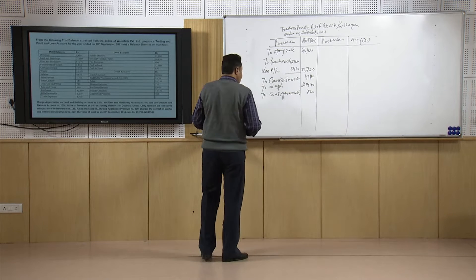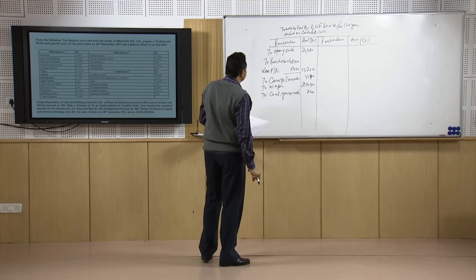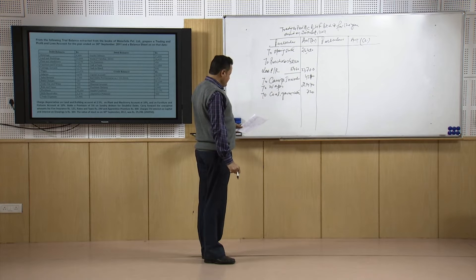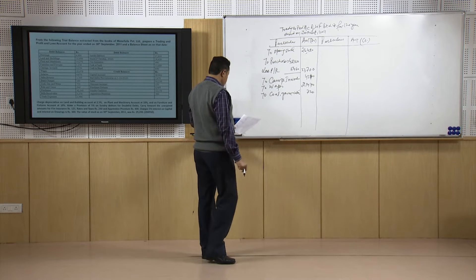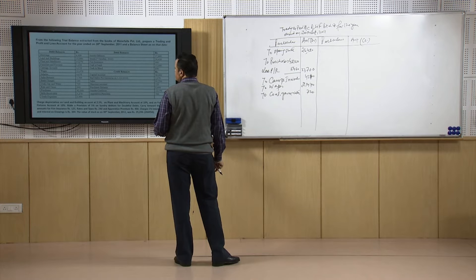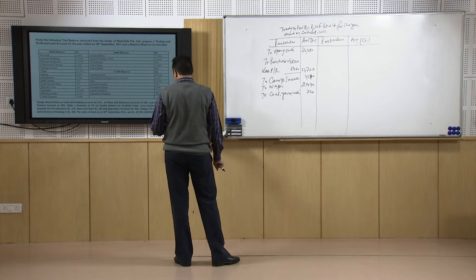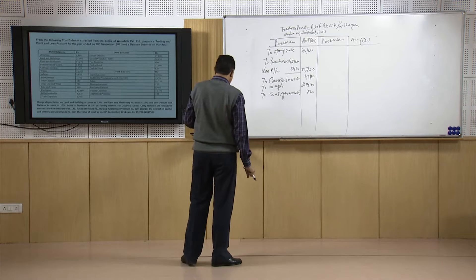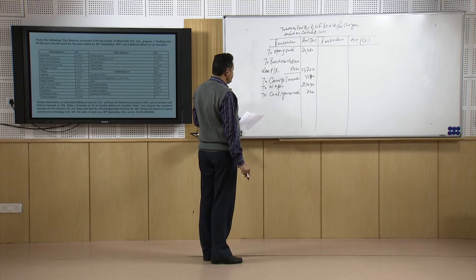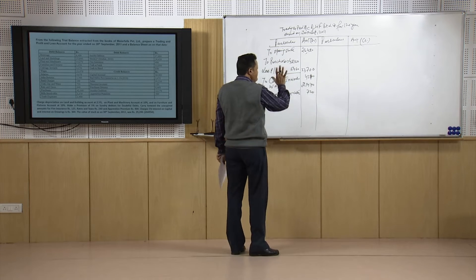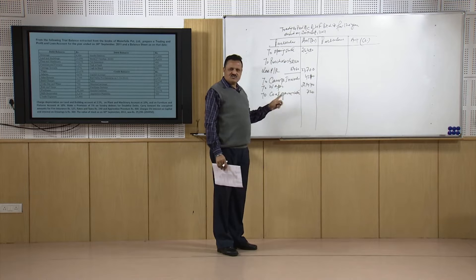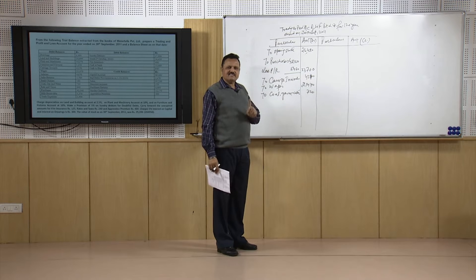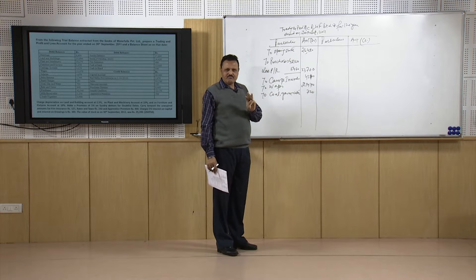In the trading account we can only take those expenses which are absolutely necessary for production — without which you would not be able to produce anything in the plant. These are called direct expenses and they fall into three categories: first is material cost, second is labour cost, and third is other direct expenses. Only these three heads of expenses appear in the trading account.